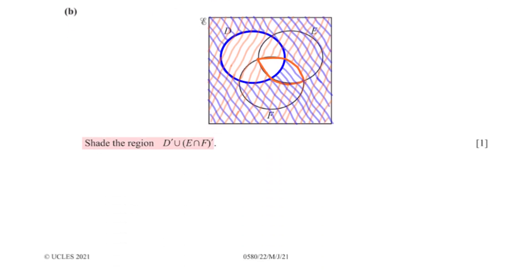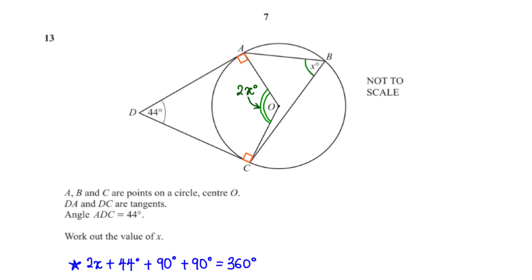Shade the region D complement union E intersection F. Since we have union here, we can shade D complement, which is the region outside D.